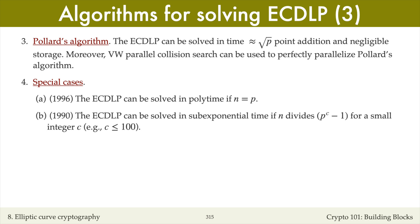The second special family of elliptic curves is comprised of elliptic curves whose number n of points divides p to the c minus 1 for a small integer c, for example c at most 100. These curves can be avoided in practice by checking that n is not equal to p, and that n does not divide p to the c minus 1 for all integers c between 1 and 100.